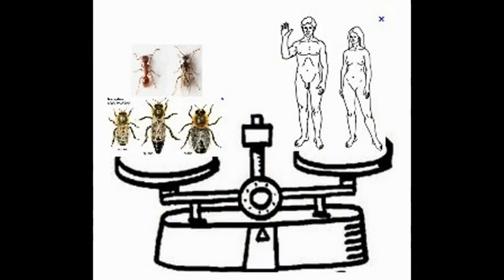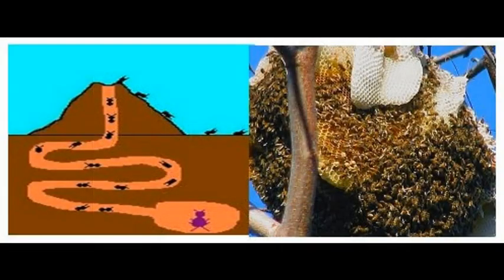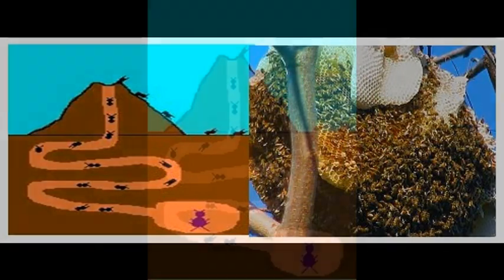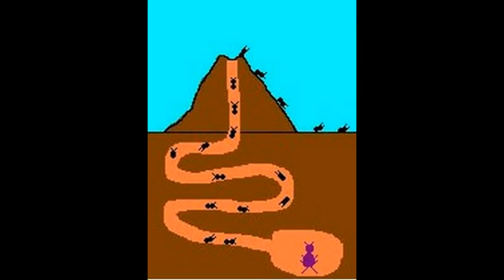Like with man, the ants and bees' success in thriving in so many environments has been attributed to their social organization. The ants are able to modify habitats and to exploit resources, including the crops and buildings of man. This puts them in direct conflict with humans who also thrive by exploiting their environment.